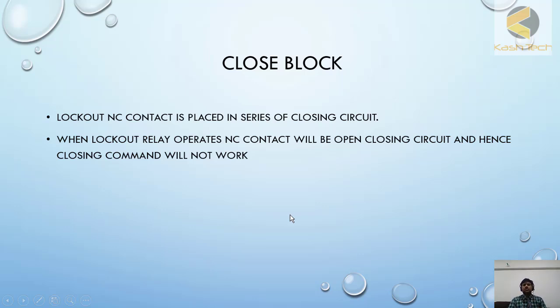Lockout normally closed contact is provided in the closing path in series. So when the lockout is operated, NC contact will become open and it will cut the DC supply of closing circuit.